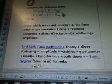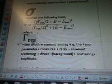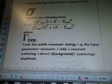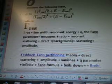I don't know what this symbol is, I don't know if it's waveform, I forget what it's called. I don't really know what these symbols mean. It assumes the following form where T_res, so I'll put T_res plus line width, resonant energy, plus Q. The Fano parameter measures ratio resonant scattering to direct background scattering amplitude. Then I take the Feshbach-Fano partitioning theory and add direct scattering amplitude vanishes. The Q parameter infinite Fano formula boils down to the Breit-Wigner-Lorentzian formula. And then Feshbach-Fano Partitioning plus relativistic Breit-Wigner distribution plus 4-momentum.